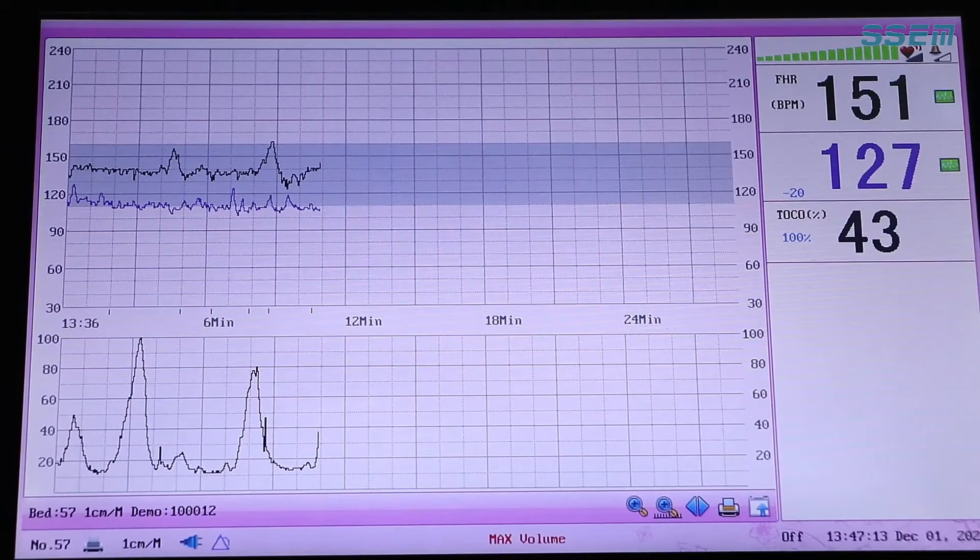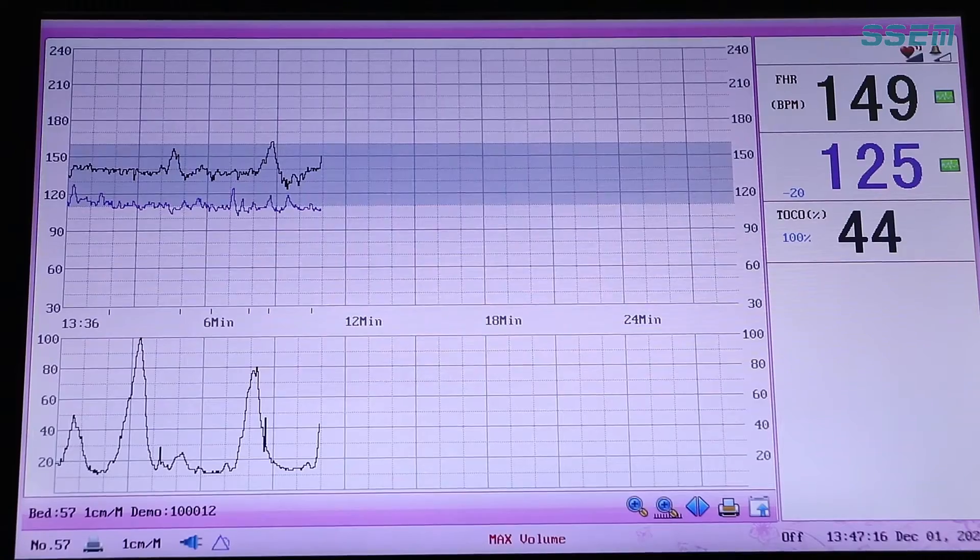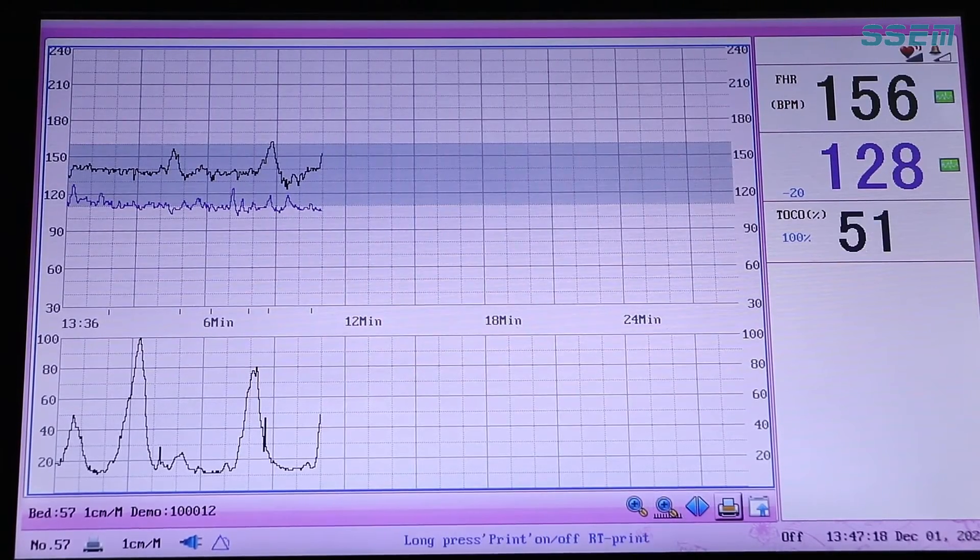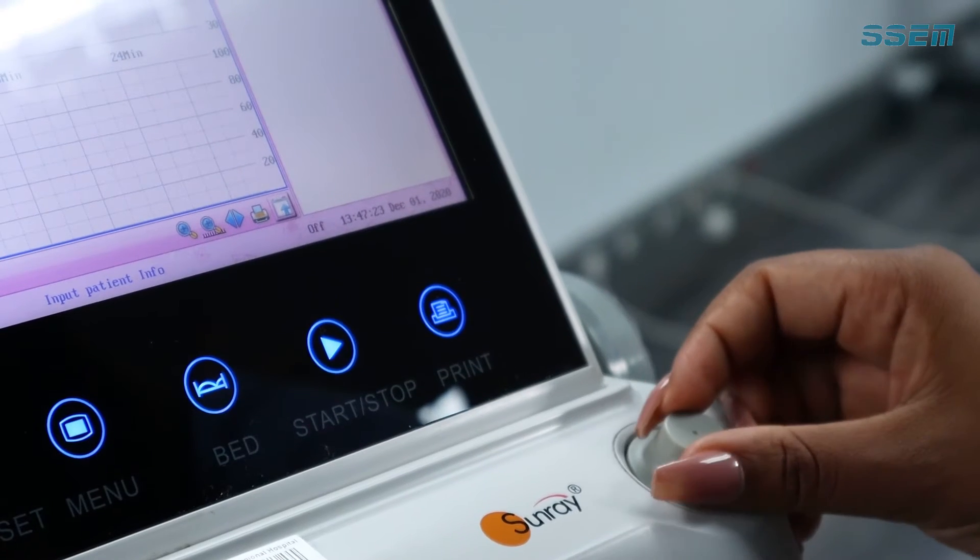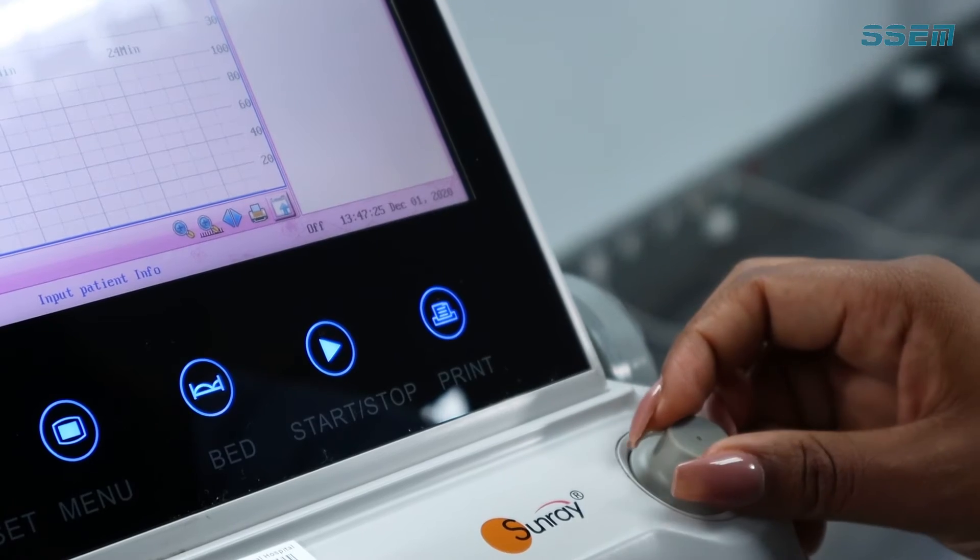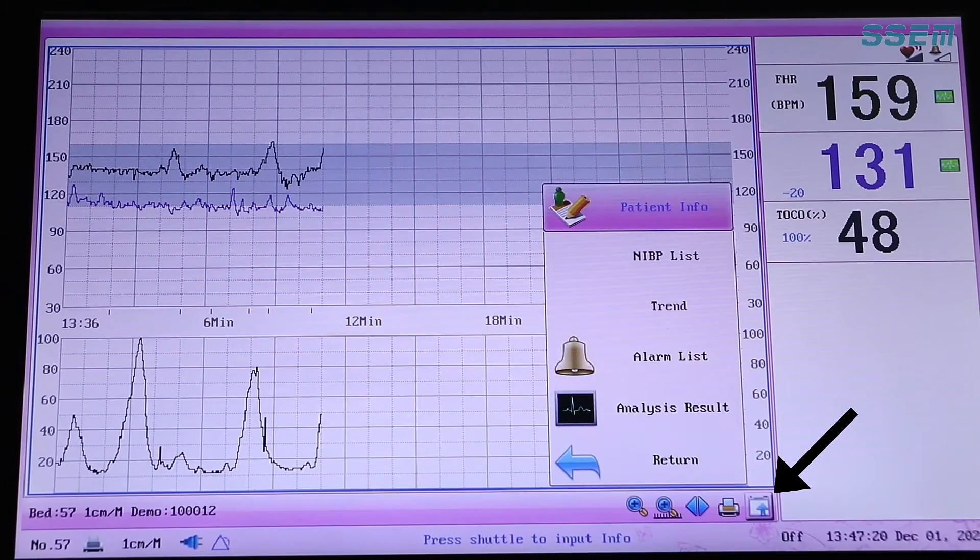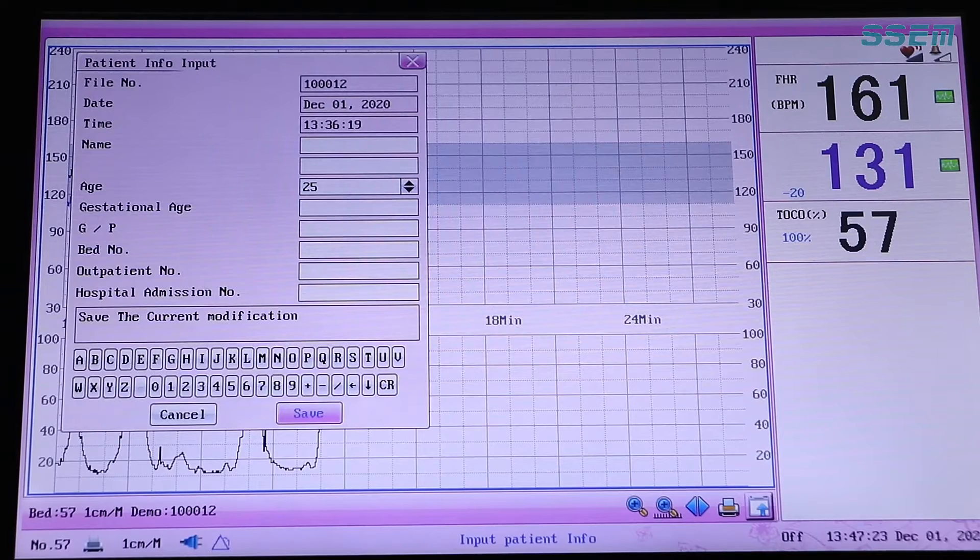Inserting the patient's demographics. Press bed. Pressing bed puts a blue border around your monitor tracing giving you access to the inner menu. Using your control knob rotate to the file. Push it once to select the file. Select patient info.